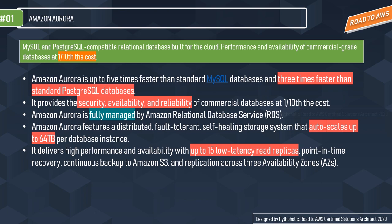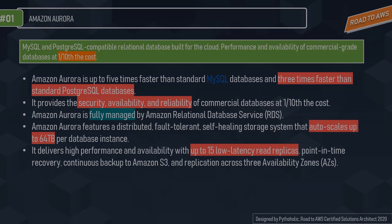When it comes to performance, Amazon Aurora delivers high performance and availability with up to 15 low-latency read replicas. Second is point-in-time recovery — if you want data that was backed up six days back, you can do that. Third is continuous backup as snapshots get uploaded to Amazon S3. And last is replication across three availability zones.